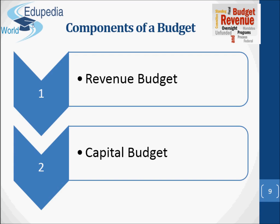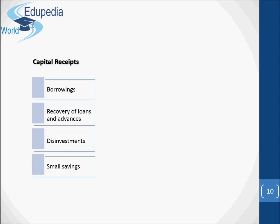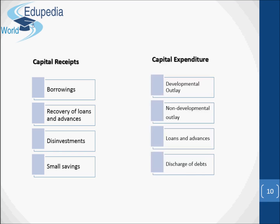The capital account is related to the acquisition and disposal of capital assets. The capital budget is a statement of estimated capital receipts and payments of the government over a fiscal year. It consists of capital receipts and capital expenditure. The capital account deals with expenditure usually met from borrowed funds, with the object of increasing concrete assets of a material character or reducing recurring liabilities, such as construction of buildings, irrigation projects, etc. Capital receipts include borrowings, recovery of loans and advances, disinvestments, and small savings. Capital expenditure includes developmental outlay, non-developmental outlay, loans and advances, and discharge of debts.